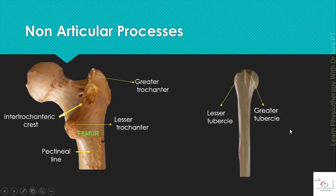Then the tuberosity. Tuberosity is of variable shape but large and rough in nature. Example is the deltoid tuberosity or the gluteal tuberosity.